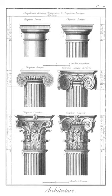Systyle: in the classical orders, this describes columns rather thickly set, with an intercolumniation to which two diameters are assigned.